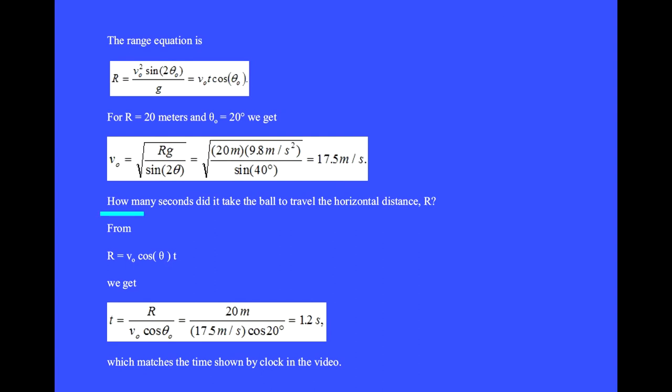How many seconds did it take the ball to travel the horizontal distance R? From R = v₀cos(θ₀)t, we solve for t = R/(v₀cos(θ₀)) = 20 m / (17.5 m/s × cos(20°)) = 1.2 seconds, which matches the time shown by the clock in the video.